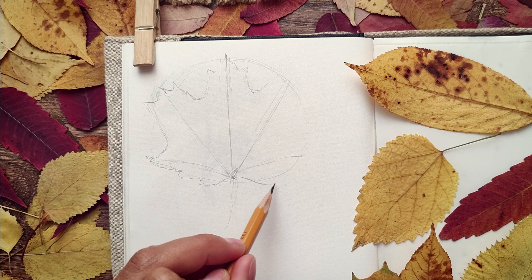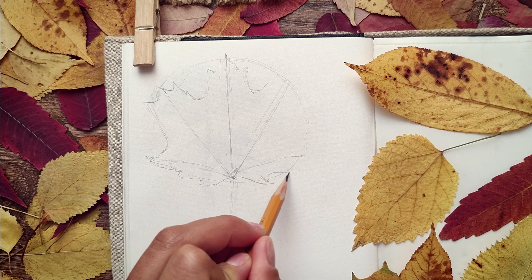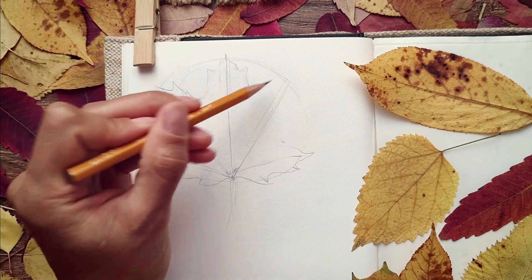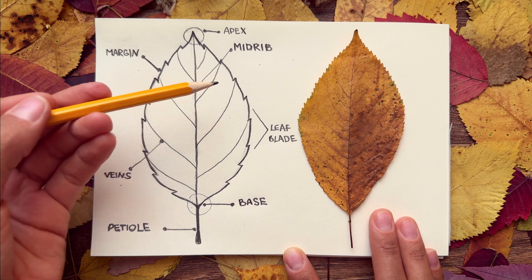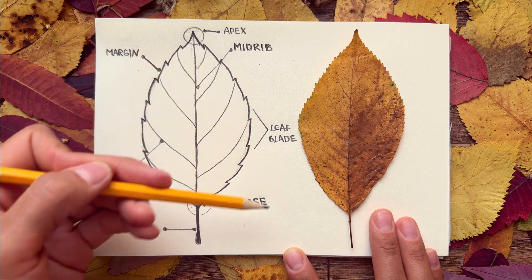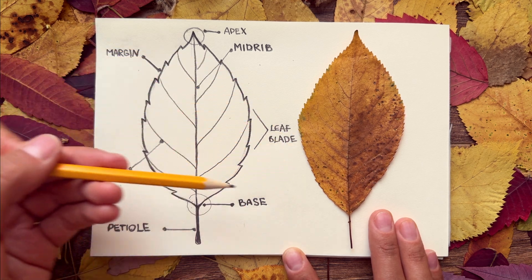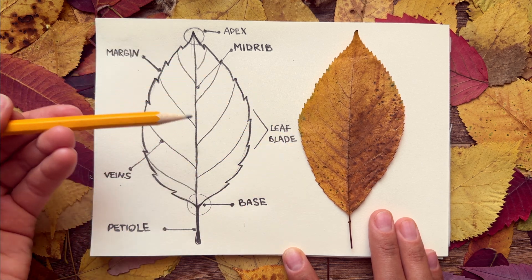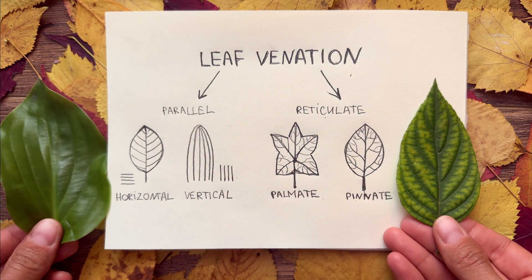Hello, my friends! Our month of drawing leaves has just begun, but before we start sketching, it's important to understand the structure of a leaf. In this video, we'll take a closer look at its anatomy and explore the four main types of venation. Let's start our leaf journey.